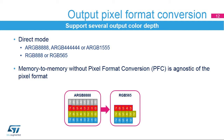The output pixel format converter generates the color for the destination independently from the source. There is no indirect mode in output, as this would imply calculating a color lookup table, or CLUT. Nevertheless, memory-to-memory operations without pixel format conversion can copy data independently of their formats.